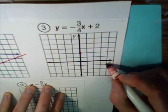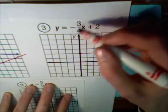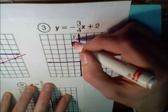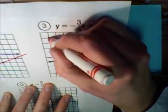We also want to try the negative of this, which would be go up 3: 1, 2, 3. And then run negative 4: 1, 2, 3, 4.